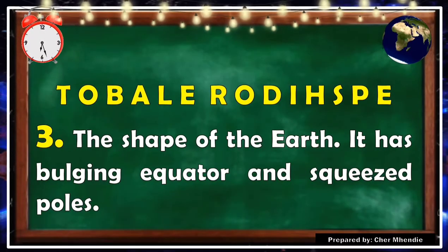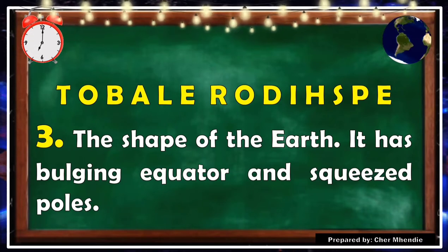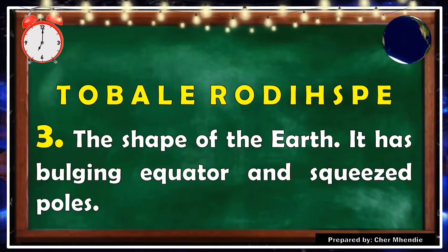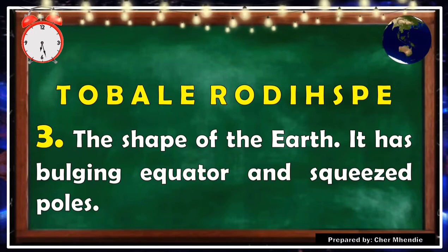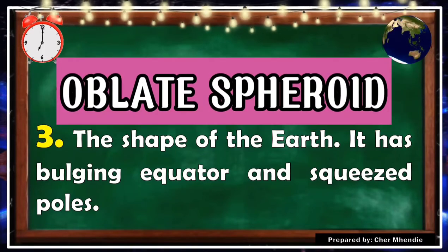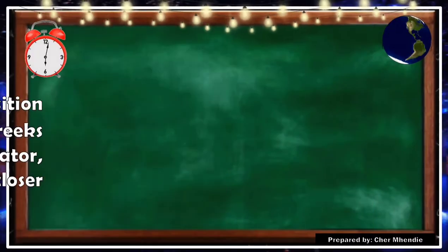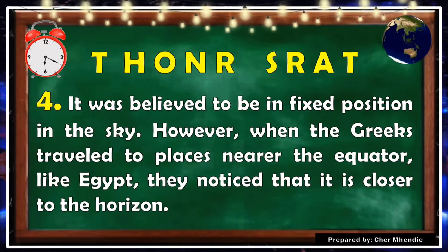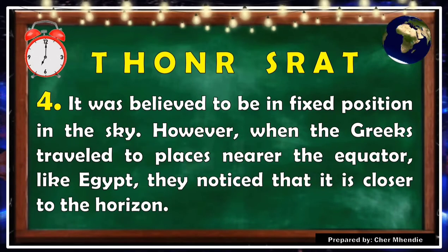Number three: The shape of the earth — it has a bulging equator and squeezed poles. Number four: It was believed to be in a fixed position in the sky. However, when the Greeks travelled to places nearer the equator like Egypt, they noticed that it is closer to the horizon. The correct answer is oblate spheroid for number three.